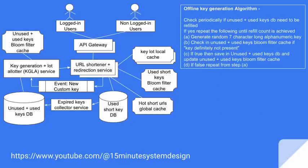For the offline key generation algorithm: periodically check if the unused plus used keys DB needs to be refilled. If yes, repeat the following until the refill count is achieved: (1) Generate a random 7-letter alphanumeric key. (2) Check if this key definitely does not exist in the unused plus used key bloom filter cache first. If yes, go ahead and save it in the DB and update the bloom filter cache. If not, repeat the process and generate the key again.